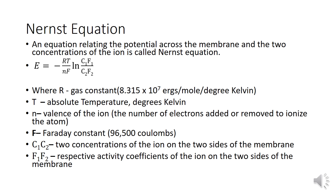F is the Faraday constant. C₁ and C₂ are the two concentrations of the ion on the two sides of the membrane. F₁ and F₂ are the respective activity coefficients of the ion on the two sides of the membrane.